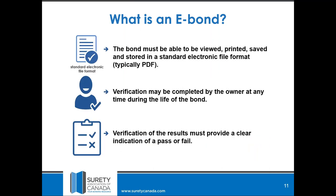Part of those requirements: the actual bond itself has to be viewable, printable, and saveable. They're created and transmitted as PDF, which is a universal format that everybody can accommodate. The verification piece was driven by the owner community — making sure the documents that they actually received are the same ones that were actually issued out of whatever system produced them. The second part of that verification piece is having an online way of quickly and easily verifying that those documents are, in fact, correct.